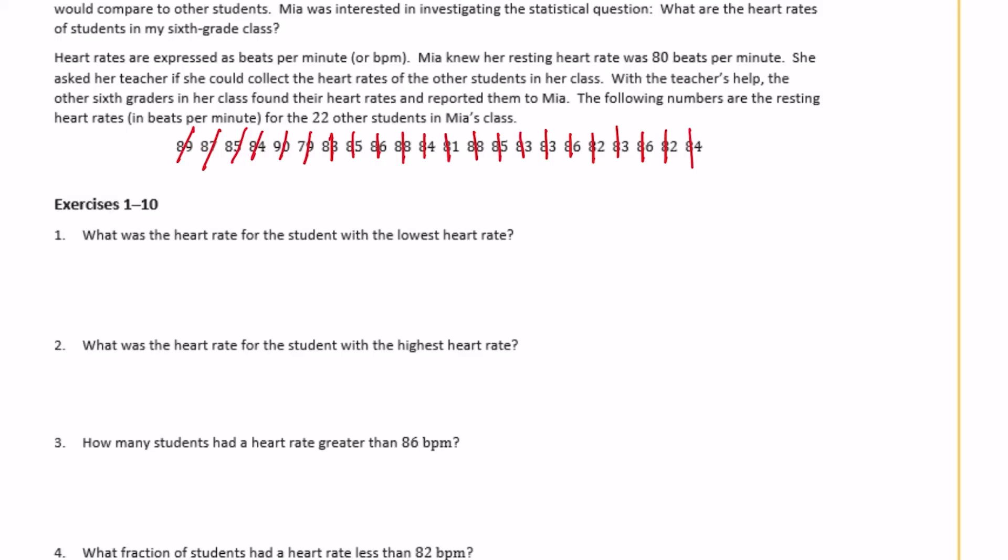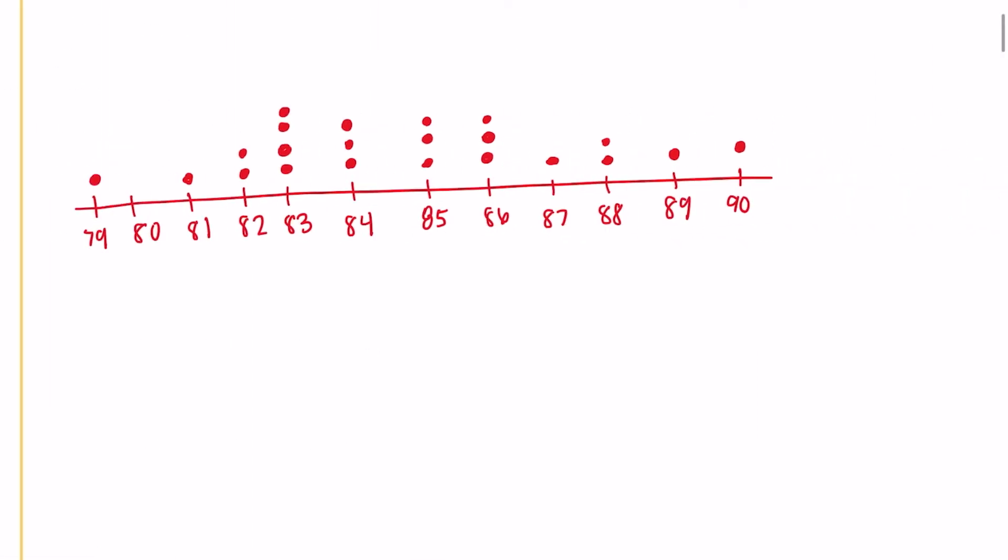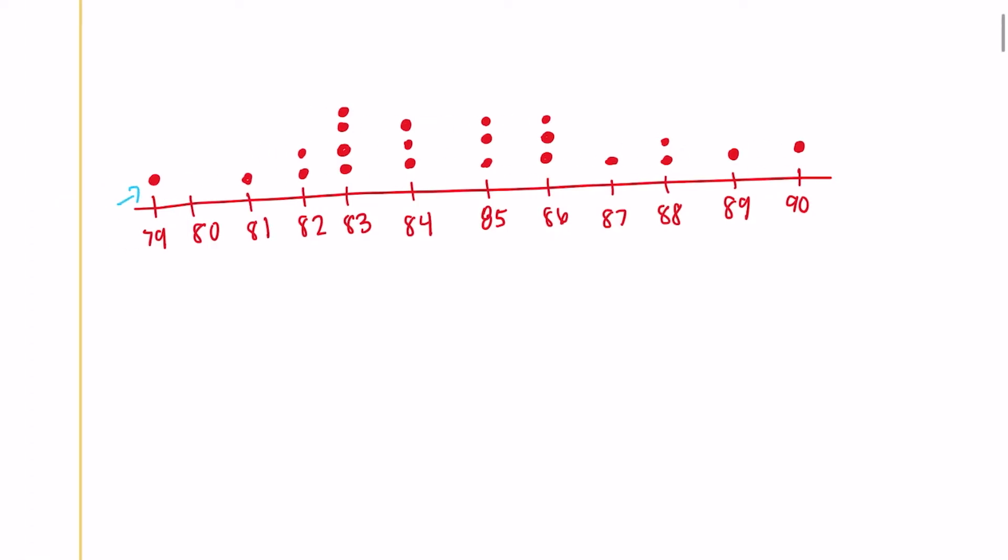And so let's go through and answer some of these questions about it. So what was the heart rate for the student with the lowest heart rate? So we can look at our dot plot and see that the lowest heart rate right here is 79. So the lowest heart rate was 79 beats per minute.